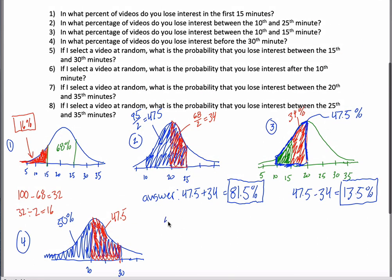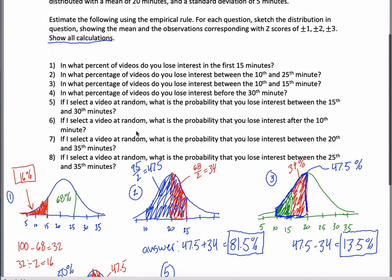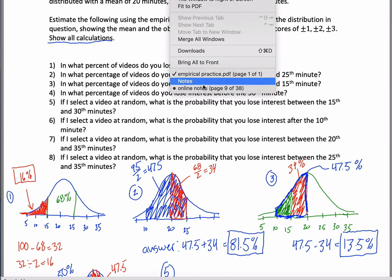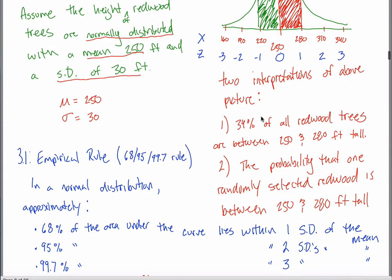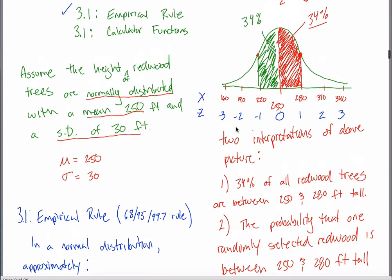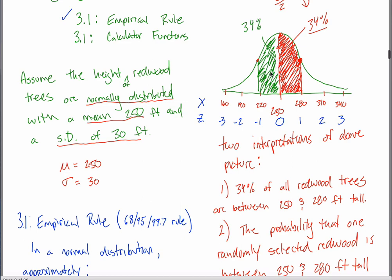Four more. Number five. If I select a video at random. Okay, note the questions are changing. In what percentage of videos, blah, blah, blah. If I select a video at random, what is the probability that, blah, blah, blah. Maybe you remember from my notes. That there are two different interpretations of the area underneath the curve. So I can ask the questions to make them look like number one like I've been doing or I can ask the questions to make them look like number two.